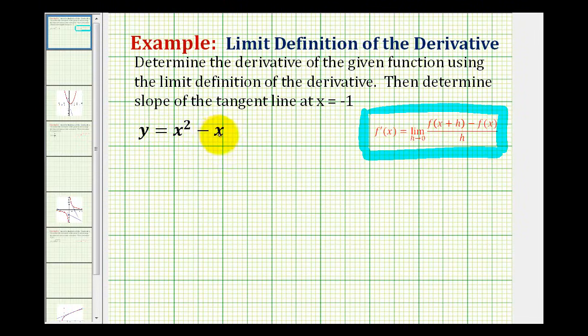Here we're given y equals x squared minus x, which is the same as saying f of x is equal to x squared minus x.